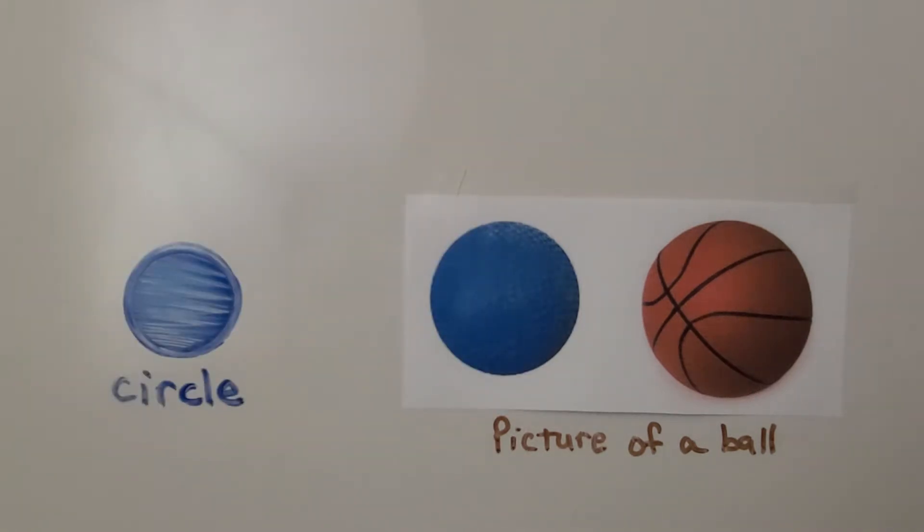In real life, a ball is a sphere, but a flat picture of a ball looks like a circle. We'll talk about spheres in Chapter 10, our next chapter.